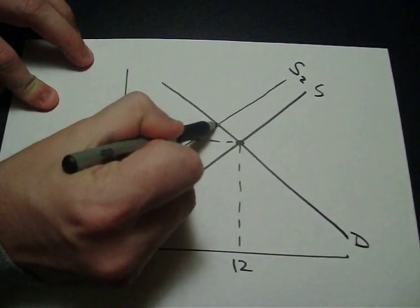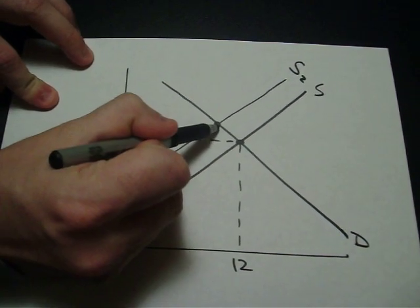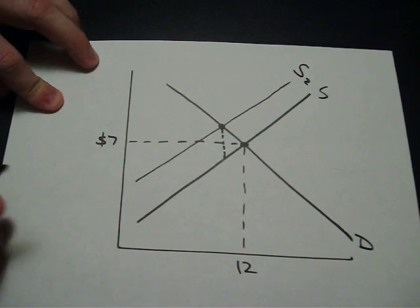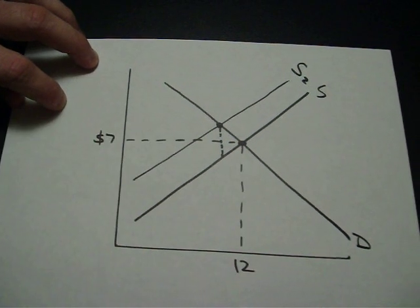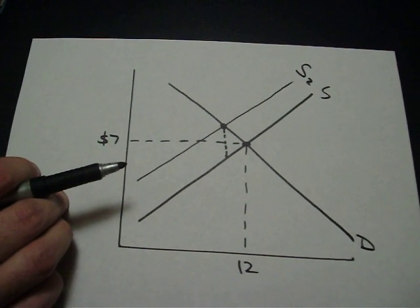This vertical distance between the new equilibrium point and the previous supply curve represents the tax. So that vertical distance is the $2 per unit tax that the government has implemented.